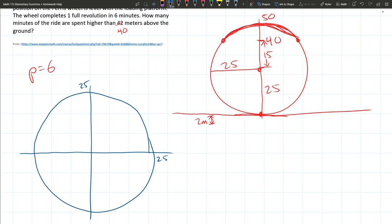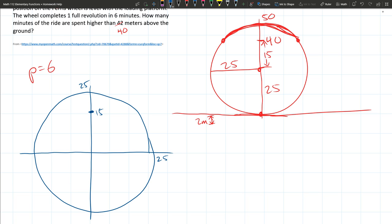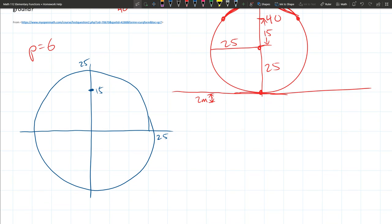Alright, we could technically just scale this to unit circle, just divide all the distances by 25, and then they'll turn into ones and ones, and this will be 15 over 25. That would be a reasonable thing to do.